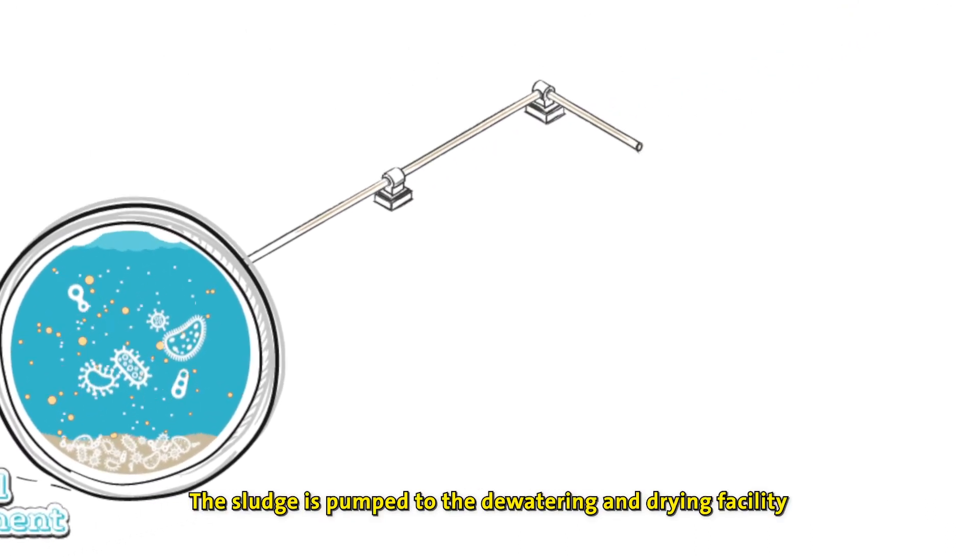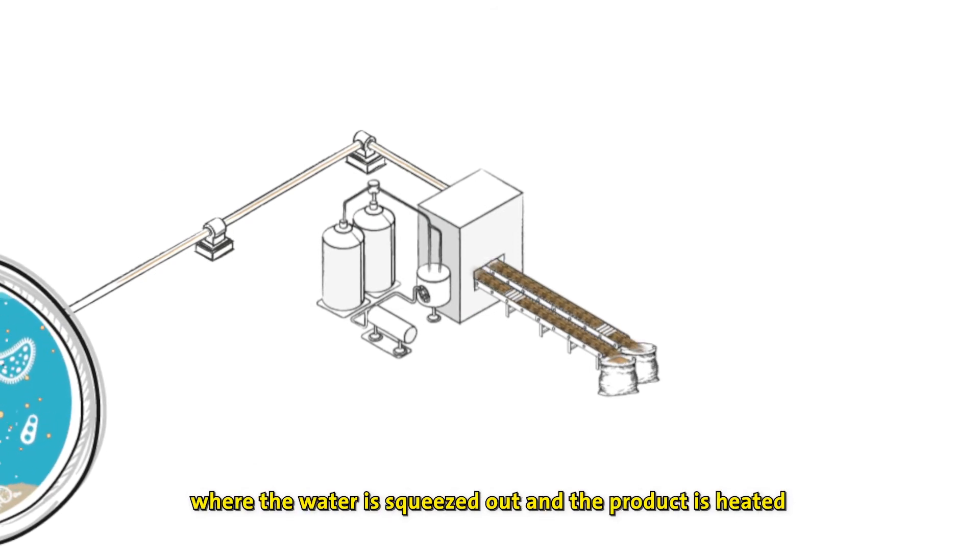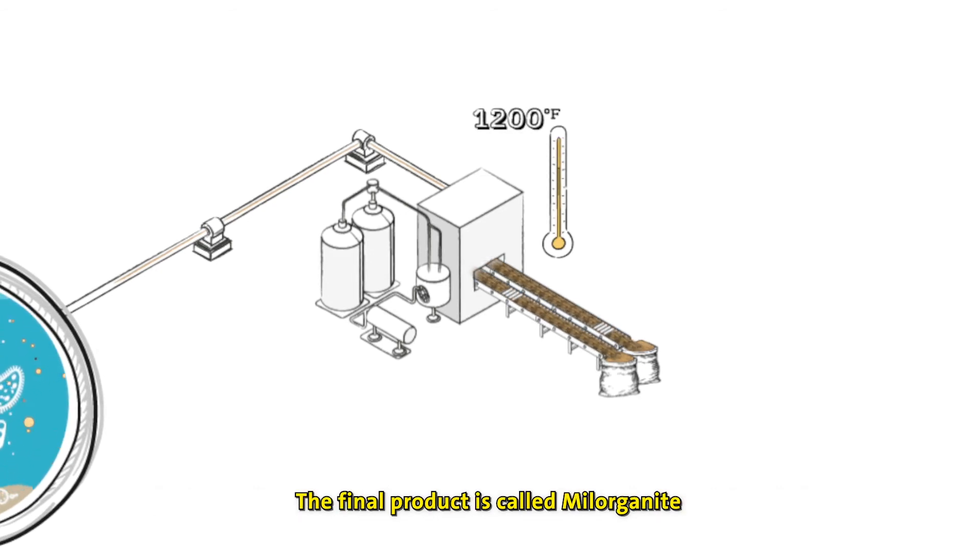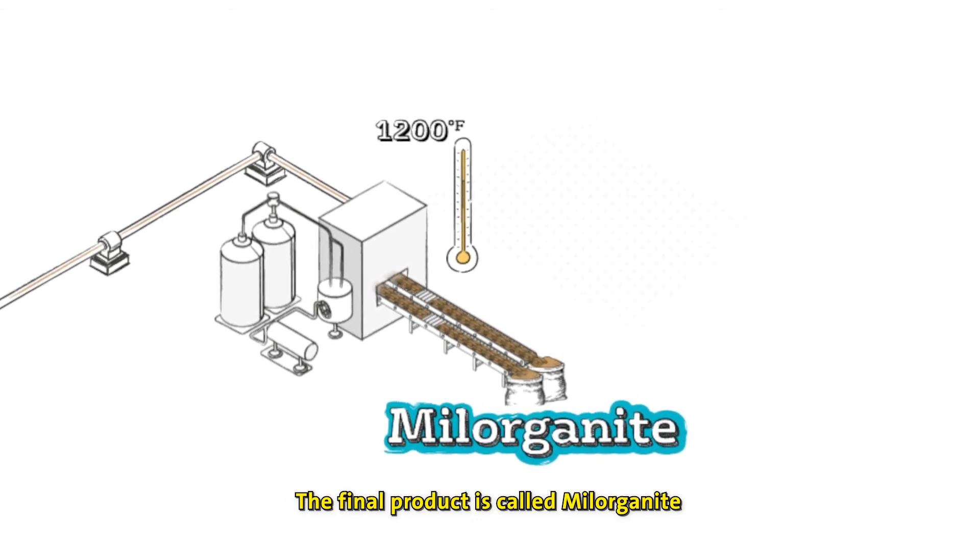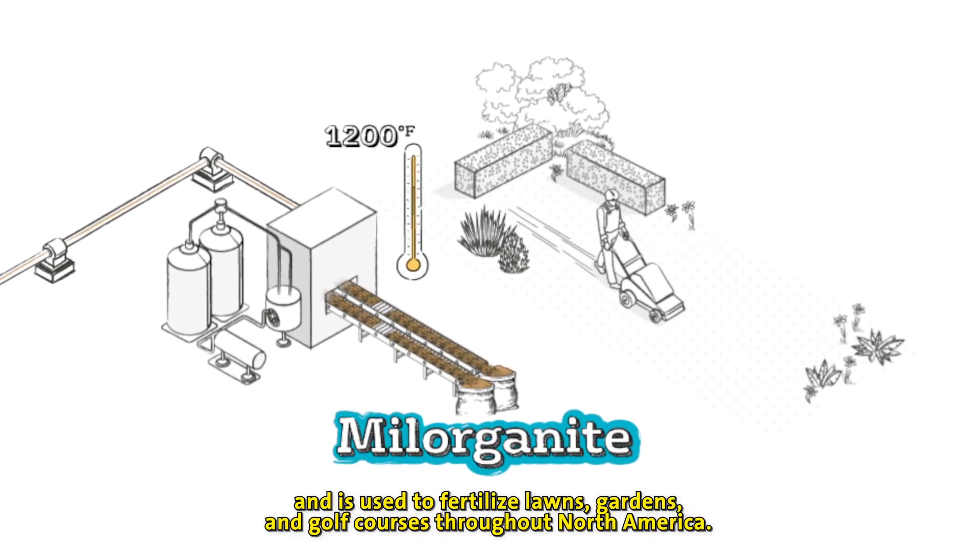The sludge is pumped to the dewatering and drying facility, where the water is squeezed out and the product is heated in dryers that can reach temperatures of 1,200 degrees Fahrenheit. The final product is called Milorganite and is used to fertilize lawns, gardens and golf courses throughout North America.